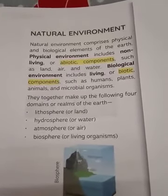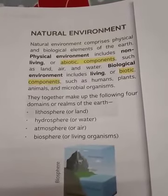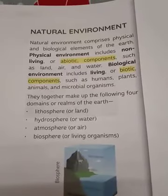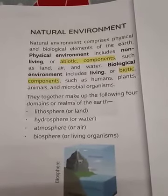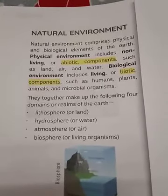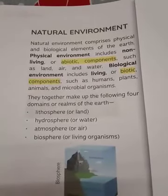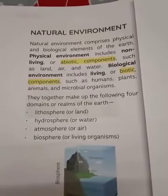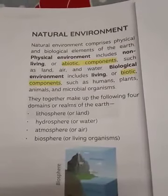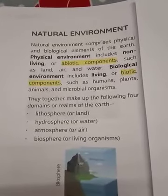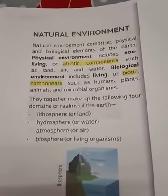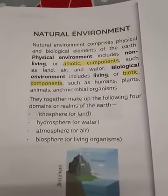Physical environment consists of abiotic components like land, air, and water. Biological environment includes living things — biotic components: humans, plants, animals, and microbial organisms. In our planet Earth, in the solar system, the only planet that supports life is Earth. Life on earth is possible because of land, water, and air. These components together are called the realms of the earth, or three domains of our earth — that is lithosphere, hydrosphere, and atmosphere.